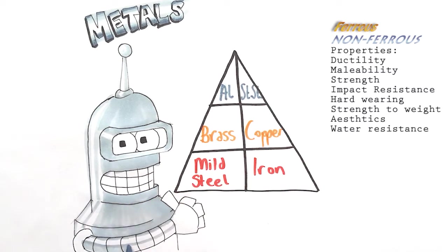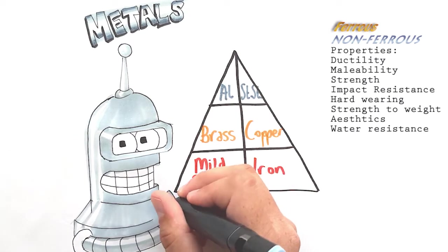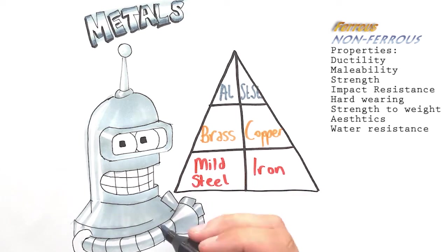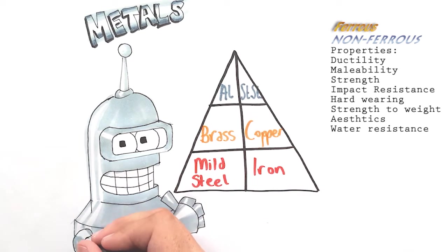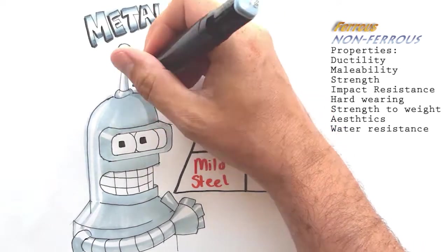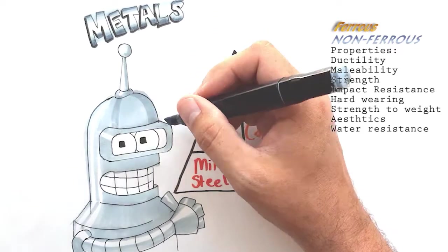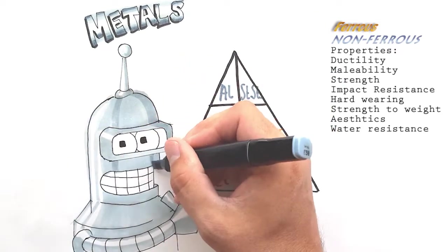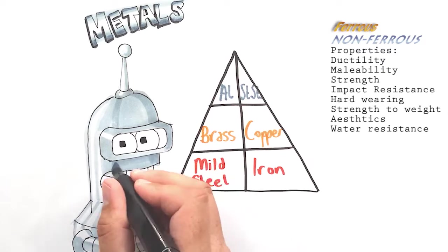Hard wearing on the other hand is a material's ability to withstand wear and tear. So if you imagine a gear, a metal gear engaging with another gear or a cog, the ability for those two gears to mesh together, we'd really need for the metal to be hard wearing. Otherwise the gear would wear out and the product would stop working.